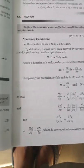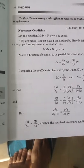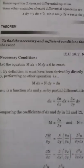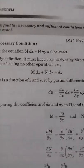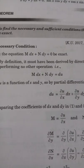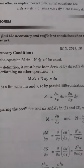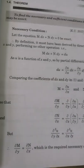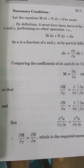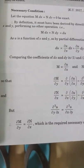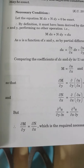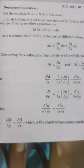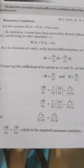For a differential equation to be exact, the necessary condition is that the partial derivative of M (the coefficient of dx) with respect to y must equal the partial derivative of N (the coefficient of dy) with respect to x. If these are equal, the equation should be exact.